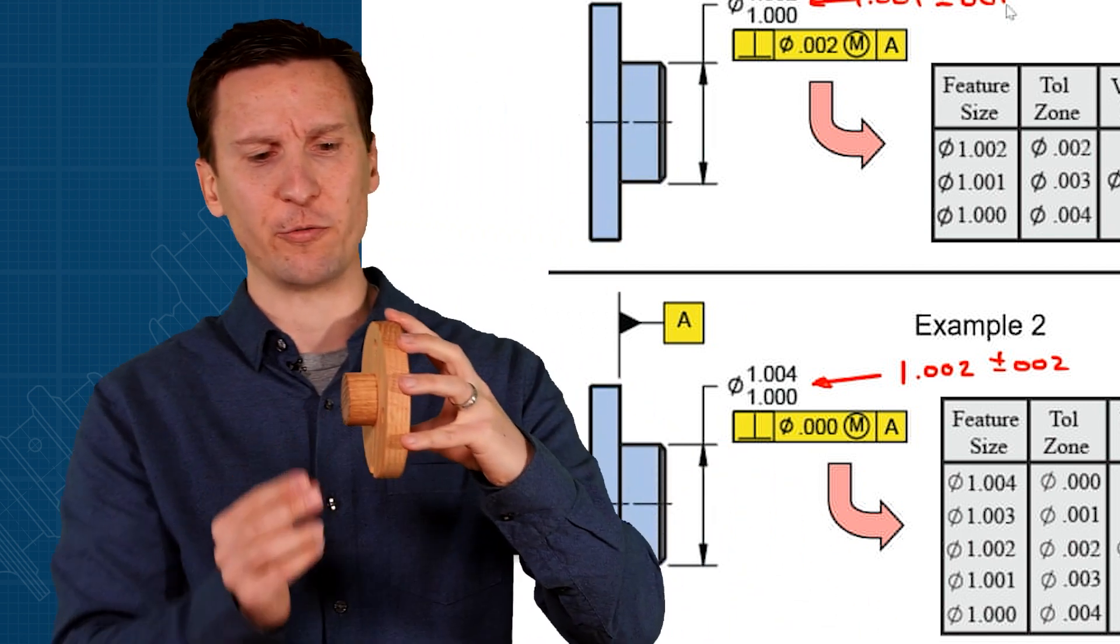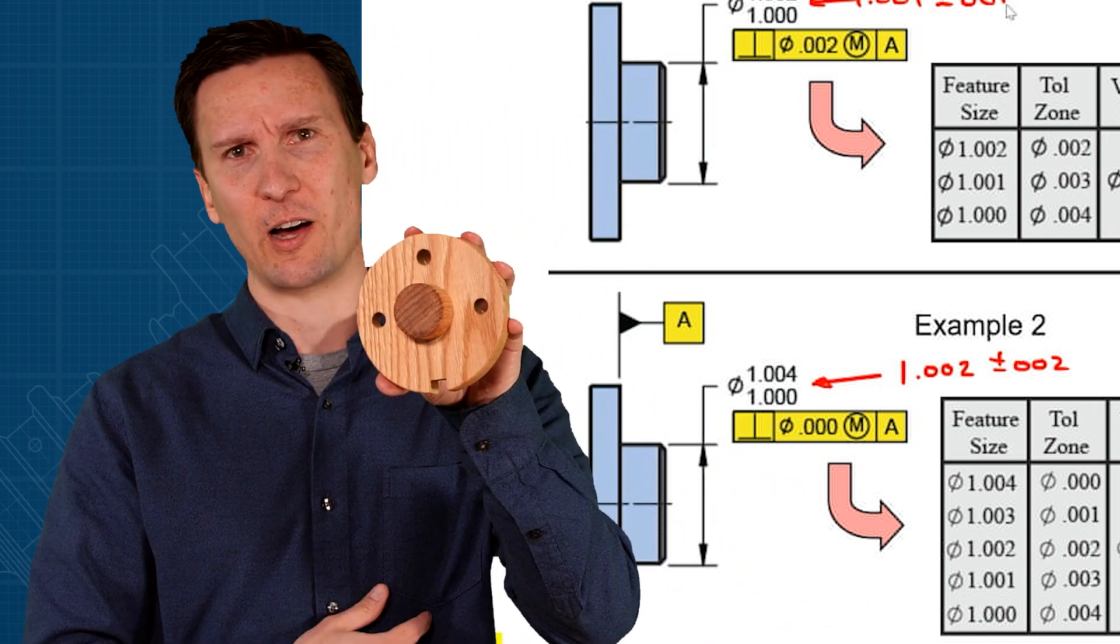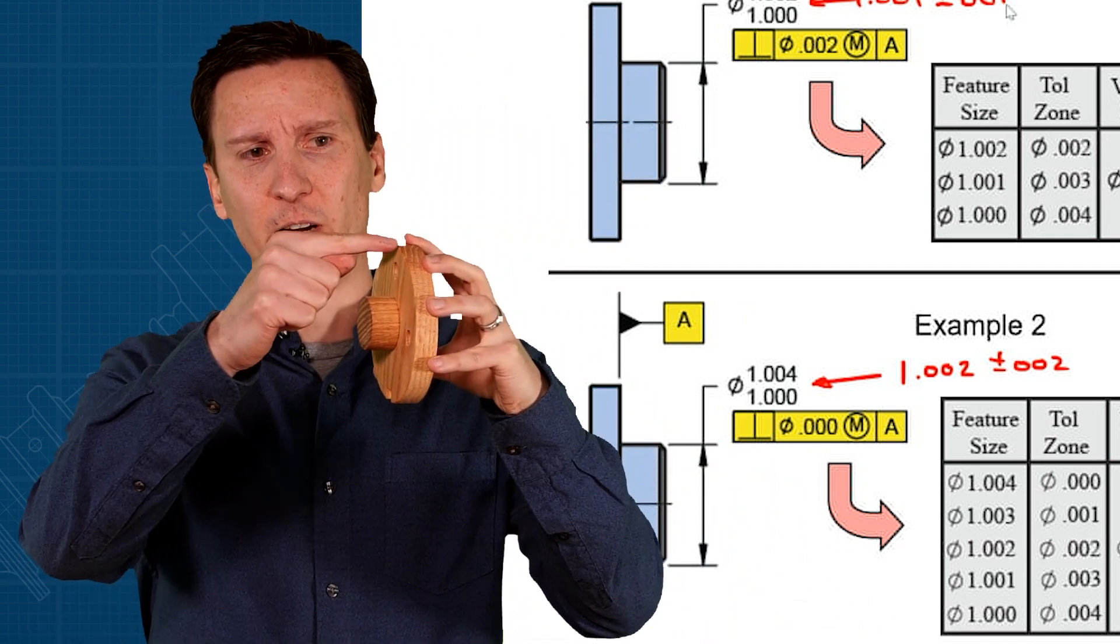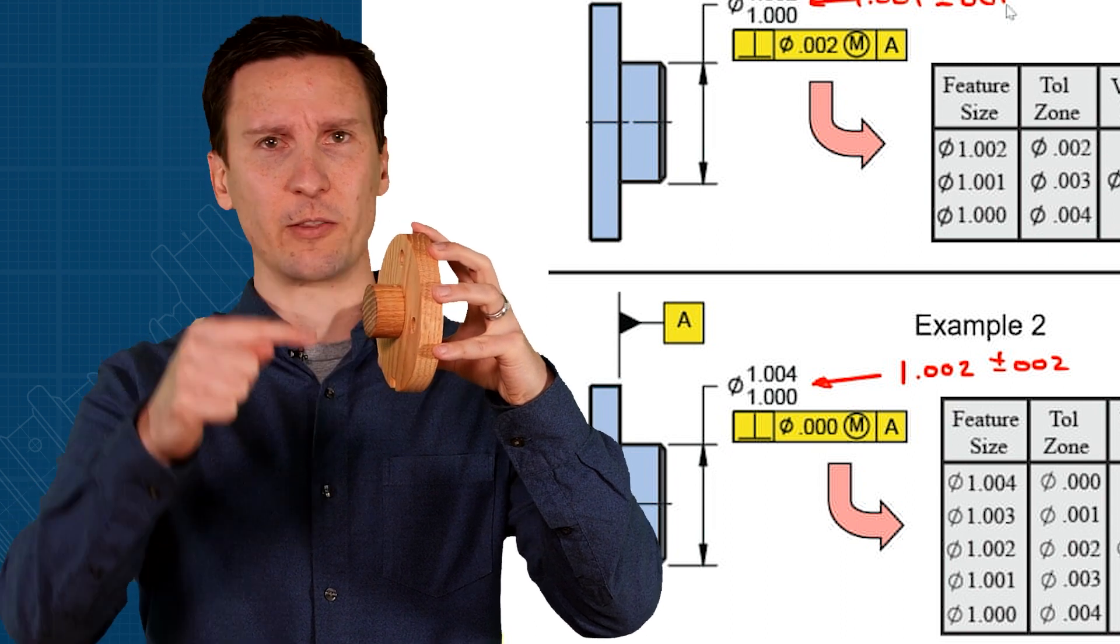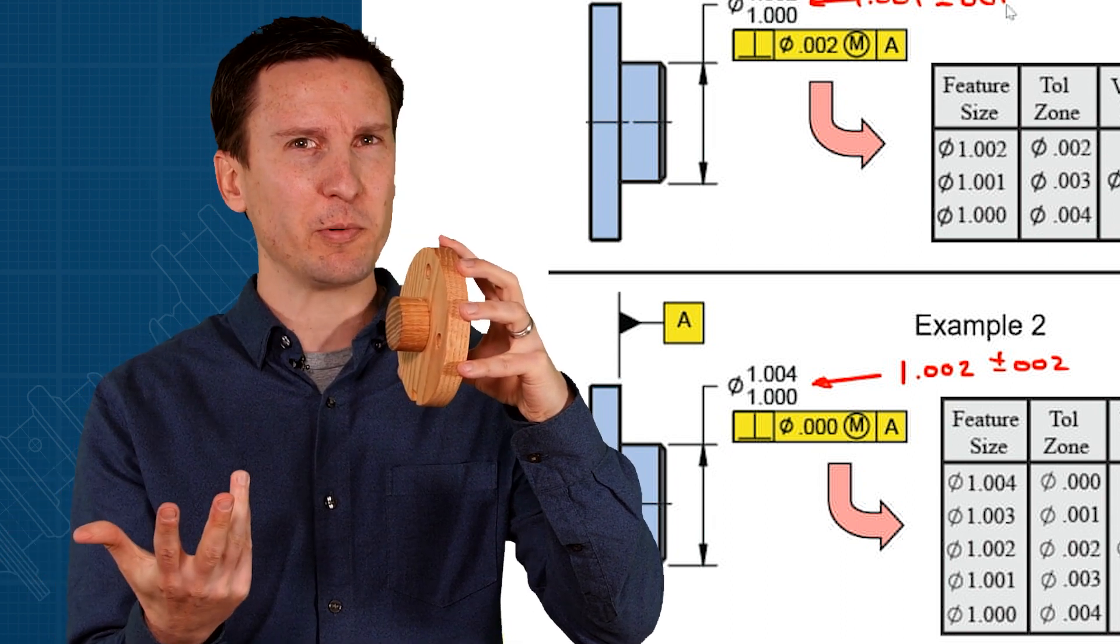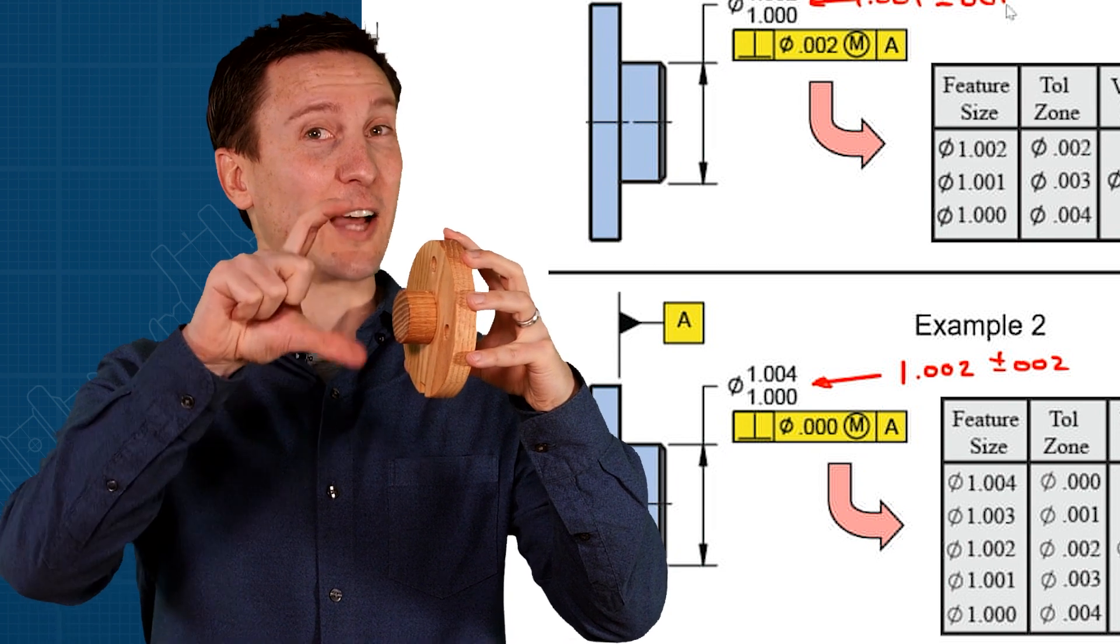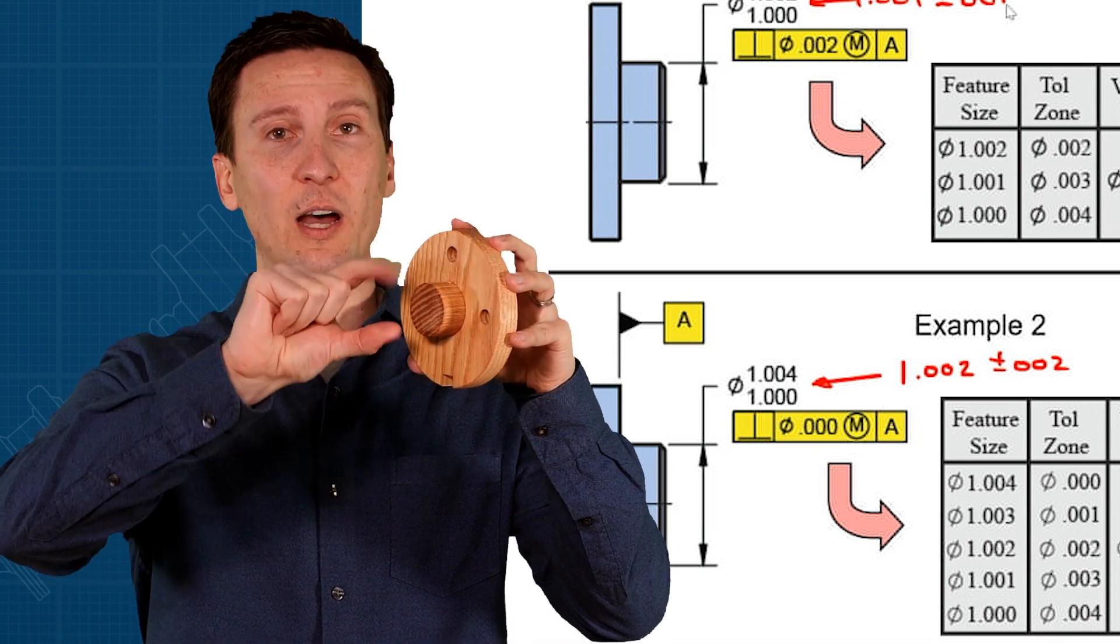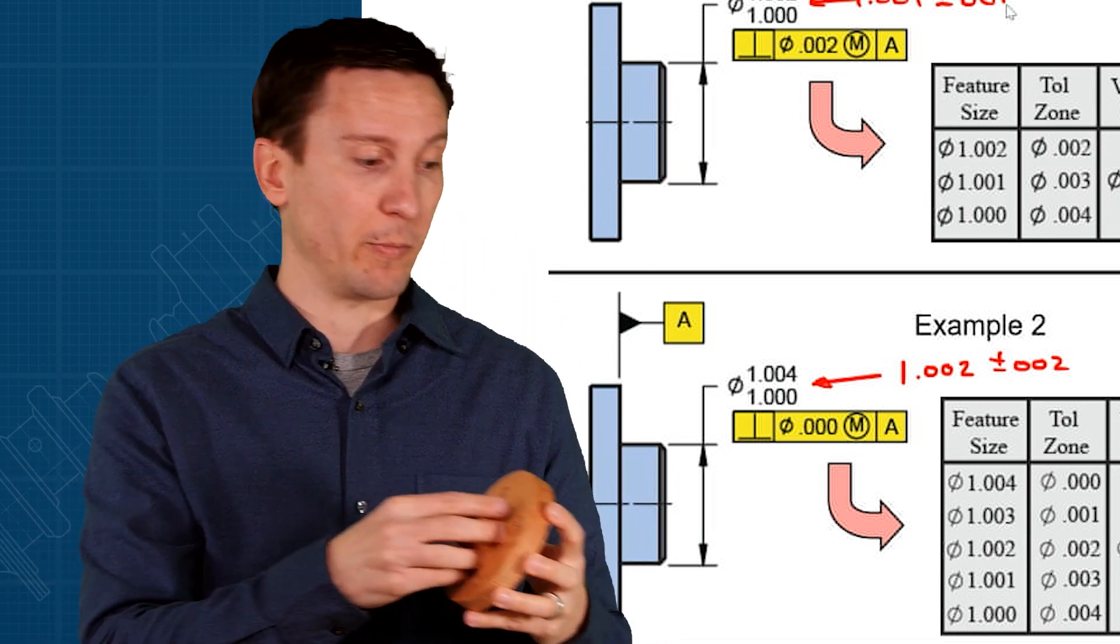And that's pretty nice for how you manufacture the part too, because how are you going to cut this? Probably on a lathe, and you're going to cut the face at the same time as you cut the pin. Are you going to have a problem with perpendicularity? No. I need size tolerance. So the more size tolerance you can give, the better it would be for manufacturing.